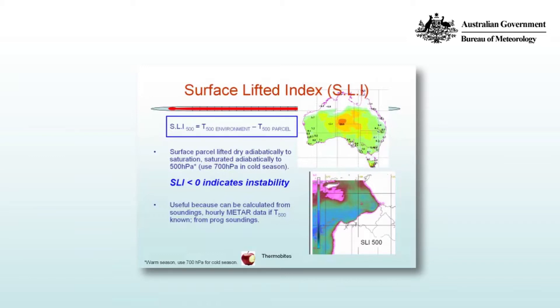SLI is quite useful because it can be calculated from soundings, hourly metadata if the 500hPa temperature is known, and from prog soundings — that is, soundings out of models.